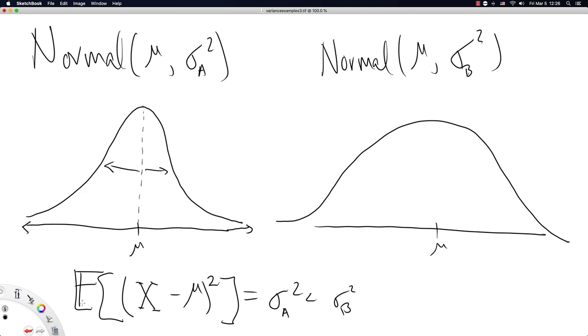It is the average squared distance the data are from the mean. Now let's try this for a different distribution.